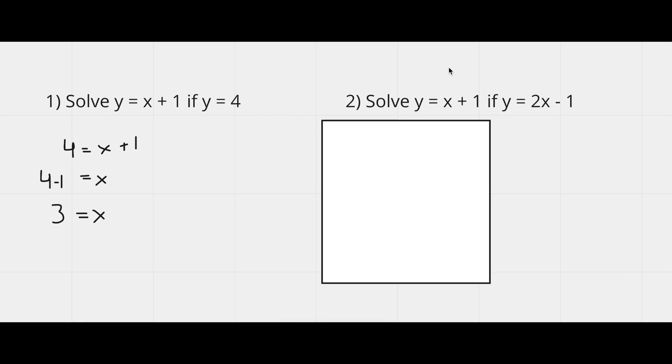Now let's solve the second one. It says solve y equals x plus one if y is equal to two x minus one. Now we just need to follow the same procedure we did back here. Now all we did was take the value of y and put it into the equation that it was asking us to solve. So we do the same thing.